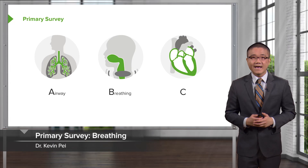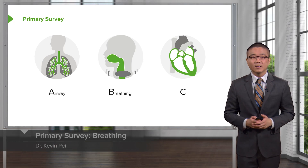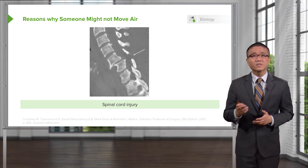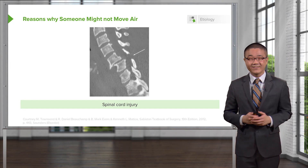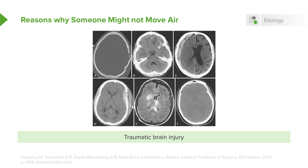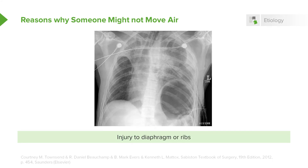After airway has been ascertained, we move on to B for breathing. In breathing, we evaluate whether or not the patient is moving air to allow ventilation. Just because the patient has an intact airway — meaning the conduit is not obstructed — does not necessarily mean the patient is actually moving air through the conduit. For example, a very high spinal cord injury can render the diaphragms paralyzed. Significant traumatic brain injury may leave the patient comatose or damage respiratory centers. Injury to the diaphragm or the ribs can significantly alter the patient's ability to move air.